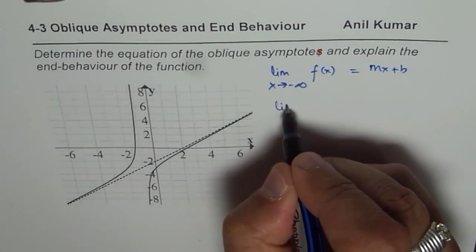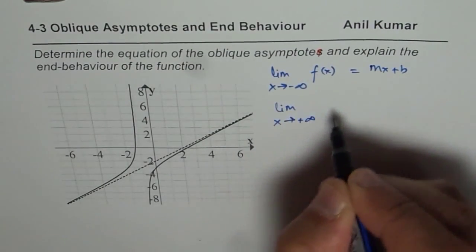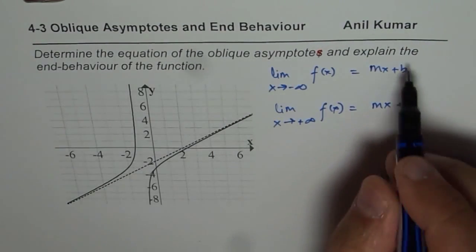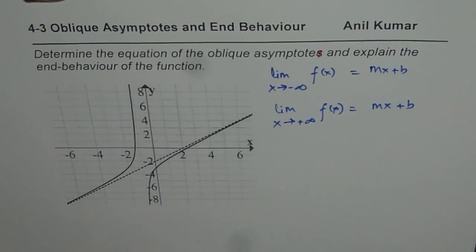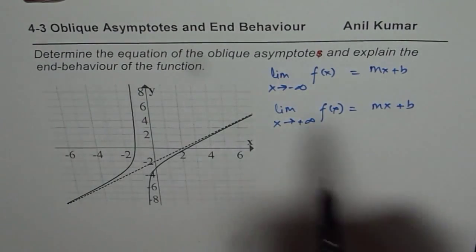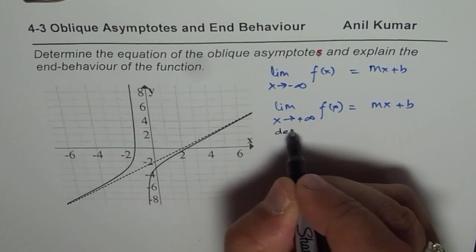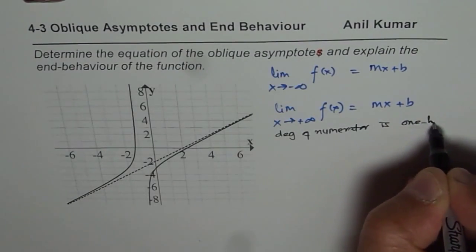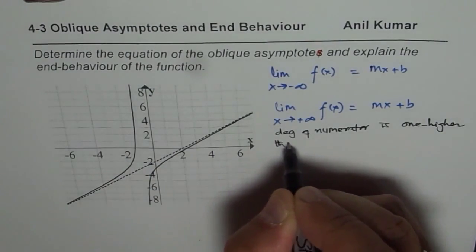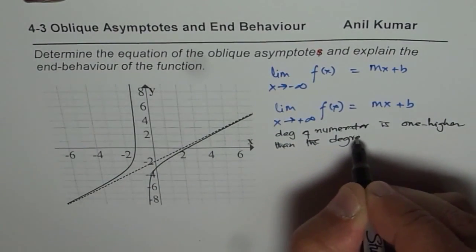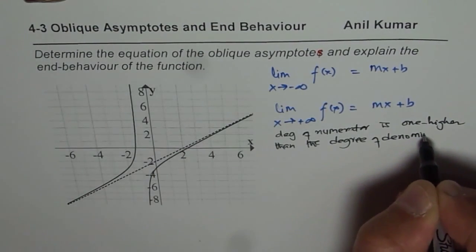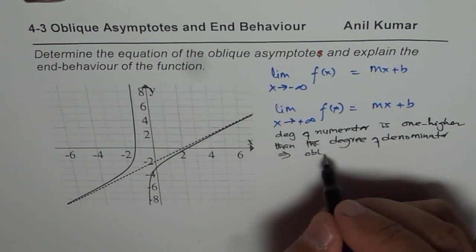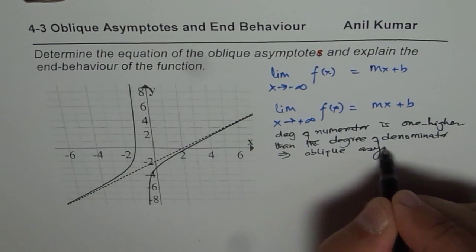This applies for both the limit on the positive side and the negative side. If the function is approaching positive infinity and it approaches a line, we say the oblique asymptote exists. Normally, if the degree of the numerator is one higher than the degree of the denominator, then you expect an oblique asymptote. That is normally the case for asymptotes of rational functions.